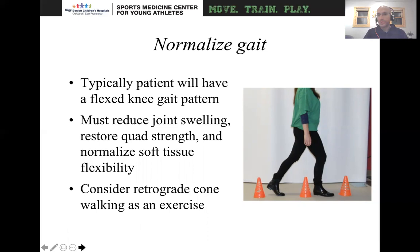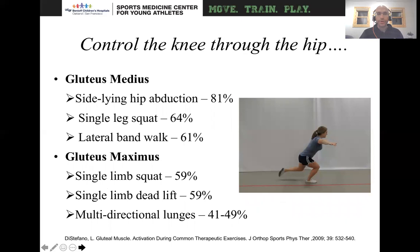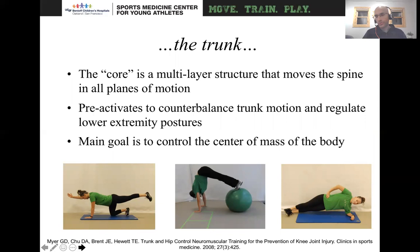You want to normalize their gait. Typically patients will have a flexed knee gait pattern. You want to reduce joint swelling, restore quad control, and normalize soft tissue flexibility. Consider retrograde cone walking as an exercise. You also want to control the knee through the hip — not just concentrating on the patellofemoral joint, but also on the core and the hip. You really want an activated gluteus medius and gluteus maximus that puts your leg in a position for good control so you won't dislocate through non-contact mechanisms.